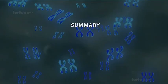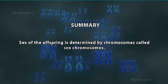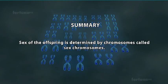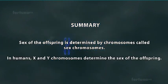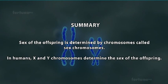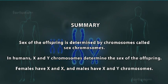Summary: The sex of the offspring is determined by chromosomes called sex chromosomes. In humans, X and Y chromosomes determine the sex of the offspring. Females have X and X, and males have X and Y chromosomes.